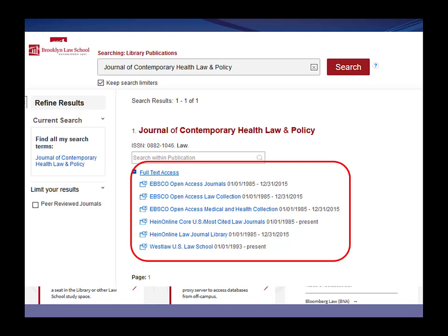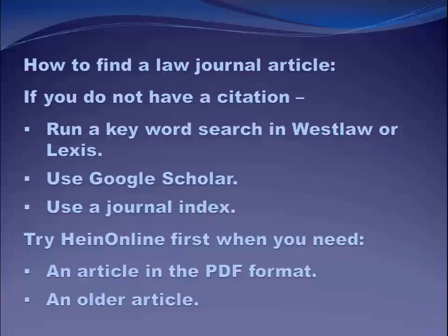Click on one of these blue links and you'll be taken right to the Journal of Contemporary Health Law and Policy in the database you selected. You can see why this find-a-source tool is a great time saver. If you don't have a citation and just want to find out about, say, cruel and unusual punishment law, you can run a keyword search in Westlaw or Lexis, the same thing in Google Scholar, use a journal index which I'll talk more about shortly, or use HeinOnline to look for a particular journal or do a keyword search there as well.